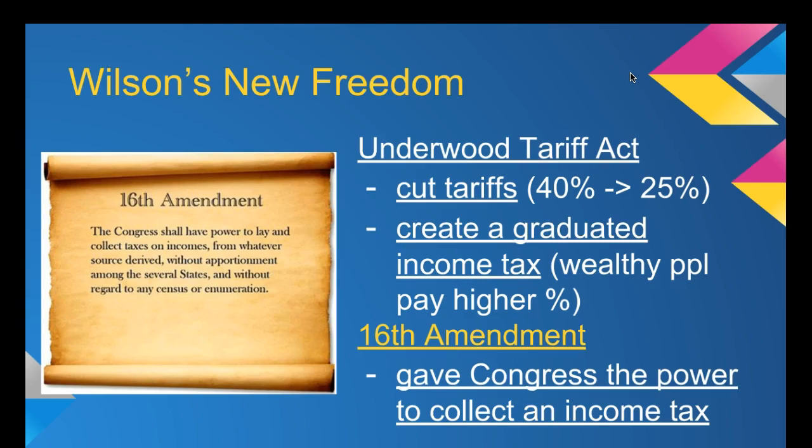During Wilson's presidency, the 16th Amendment was added to the Constitution. It reads: 'Congress shall have the power to lay and collect taxes on incomes from whatever source derived, without apportionment among the several states, and without regard to any census or enumeration.' So Congress has the power — written in the Constitution — to tax our incomes.